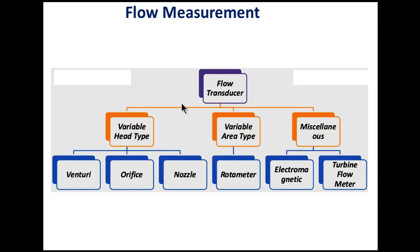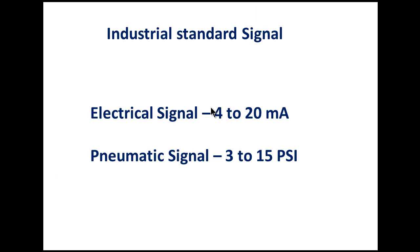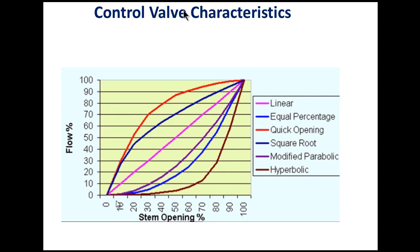Flow measurement types: variable head type (venturi tube, orifice, nozzle), variable area type (rotameter), and miscellaneous (electromagnetic flow meter, turbine flow meter). Types of flow: inferential, mass flow, and volumetric flow. Volumetric flow unit is meter cube per second; mass flow unit is kg per second. Inferential flow is defined as flow proportional to the square root of pressure. Industrial standard signals: electrical signal 4–20 mA or pneumatic signal 3–15 psi.